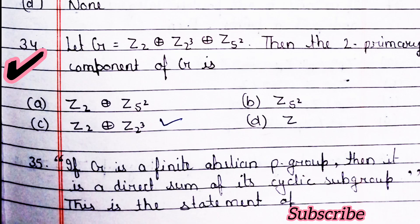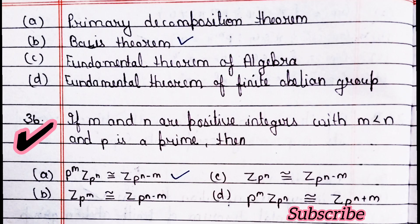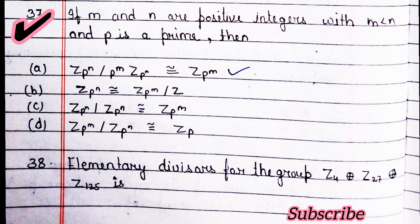Next question: a finite abelian group G is the direct sum of its p-primary components Gp — option B is right. Question 34: let G equal Z2 direct sum Z23 direct sum Z52, then the two-primary component of G is — option C is right. Next question: if G is a finite abelian p-group then it is the direct sum of its cyclic groups — option B is right.